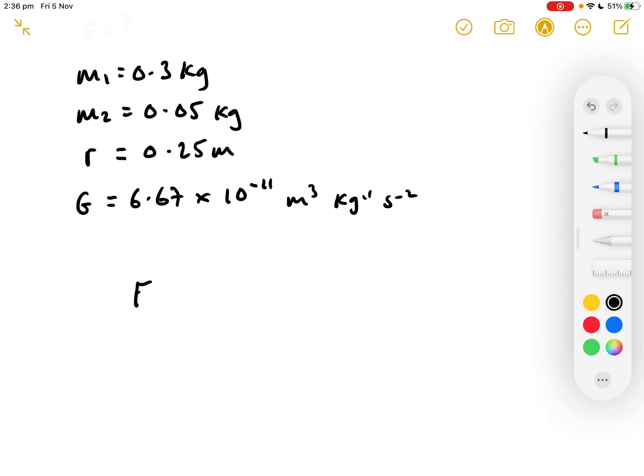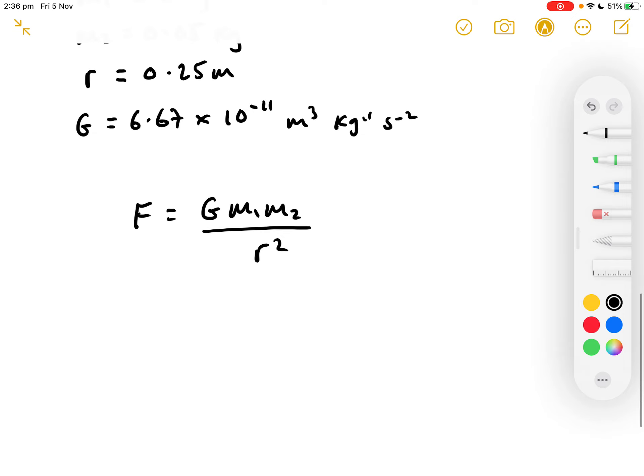Right. Well, there we are. We now pop that data into the equation. Always state the equation first. Following your variable list, of course. And in goes the data. State the equation first. And then immediately substitute the data. Don't rearrange.